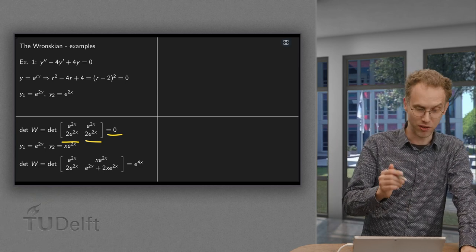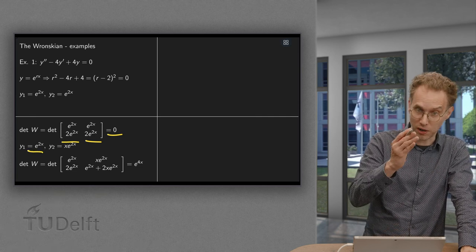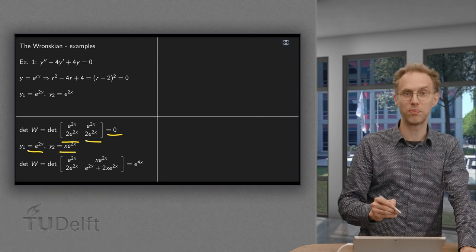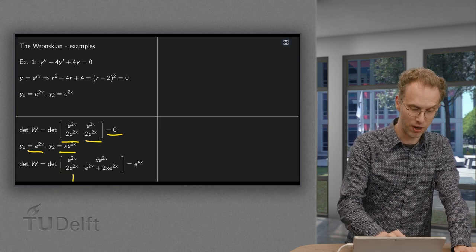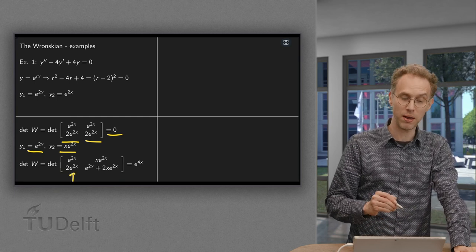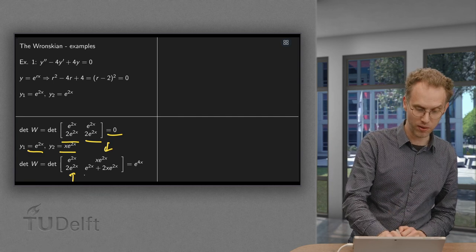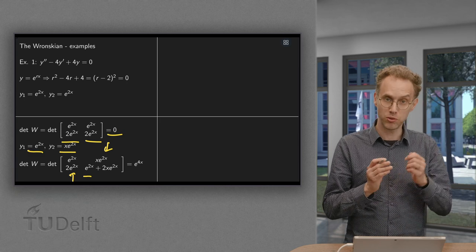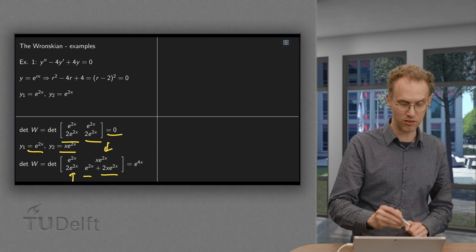So what should we do instead? Well, you have seen this also before. You need to put e^(2x) as y₁ and xe^(2x) as y₂. If you do so, we again have y₁ and y₁', and here we have y₂ and y₂', which gives us a bit more mass: e^(2x) plus, leave the x and differentiate e^(2x), gives us this term.